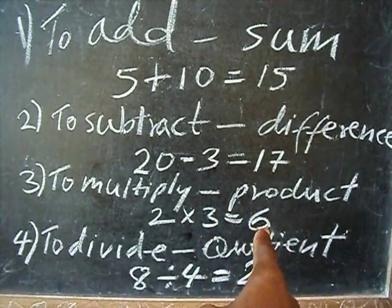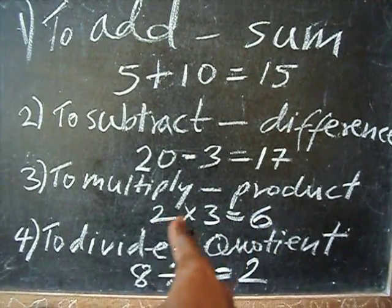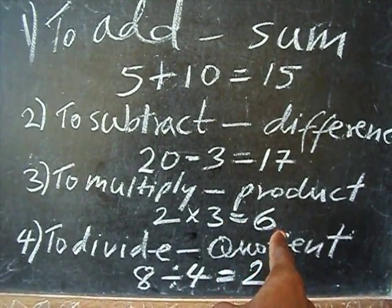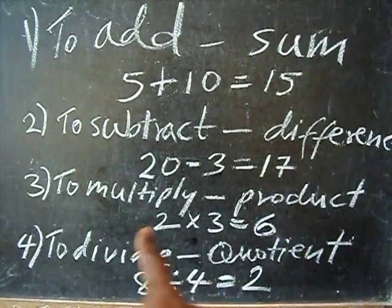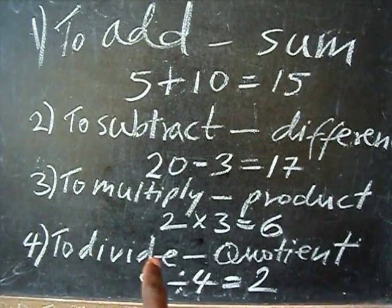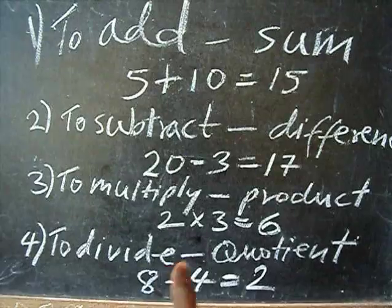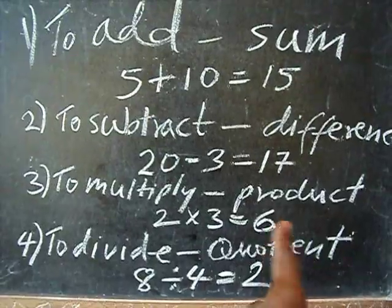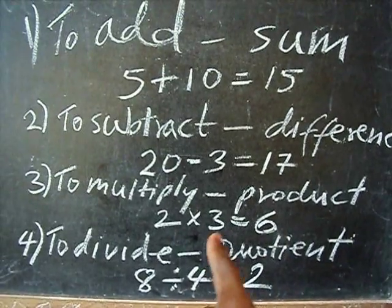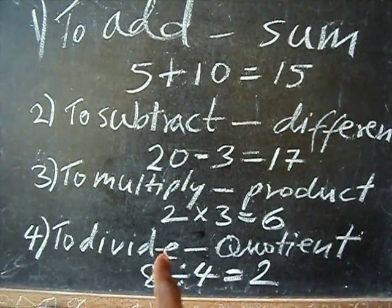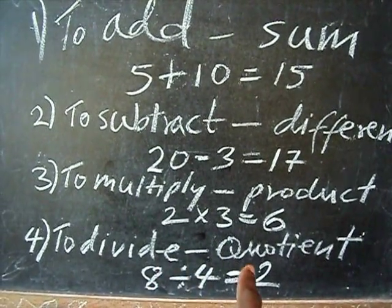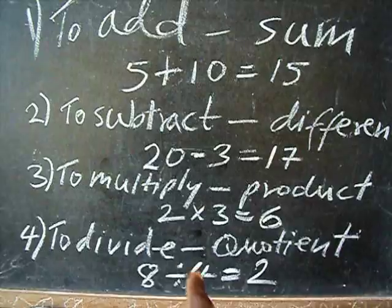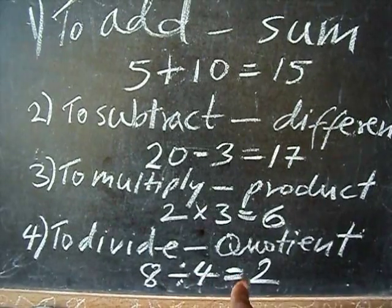The product of 2 and 3 is equal to 6 — 2 times 3 equals 6. And to divide is to find the quotient of two numbers. The quotient of 8 and 4 is equal to 2.